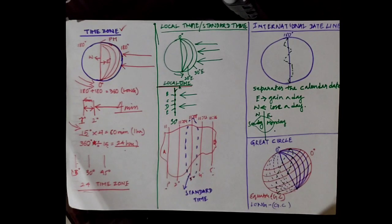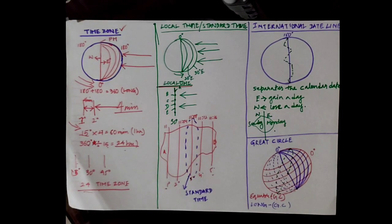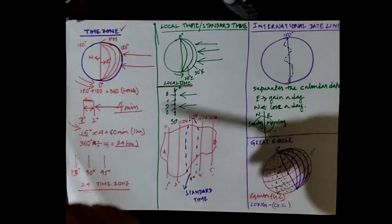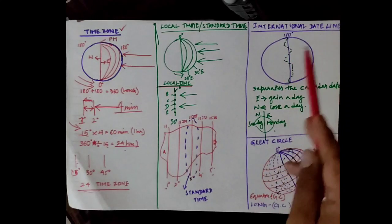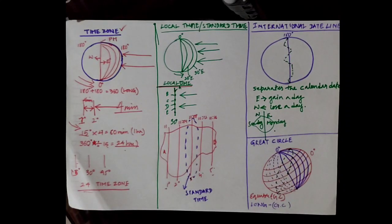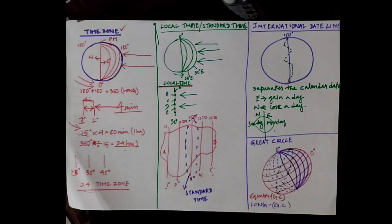Hello students, welcome to another video of the chapter Geographic Grid. In the previous video we discussed the concept of latitude and longitude. In this video we are going to discuss topics like time zone, local time, standard time, international date line, and great circle. Now let us start with the topic time zone.